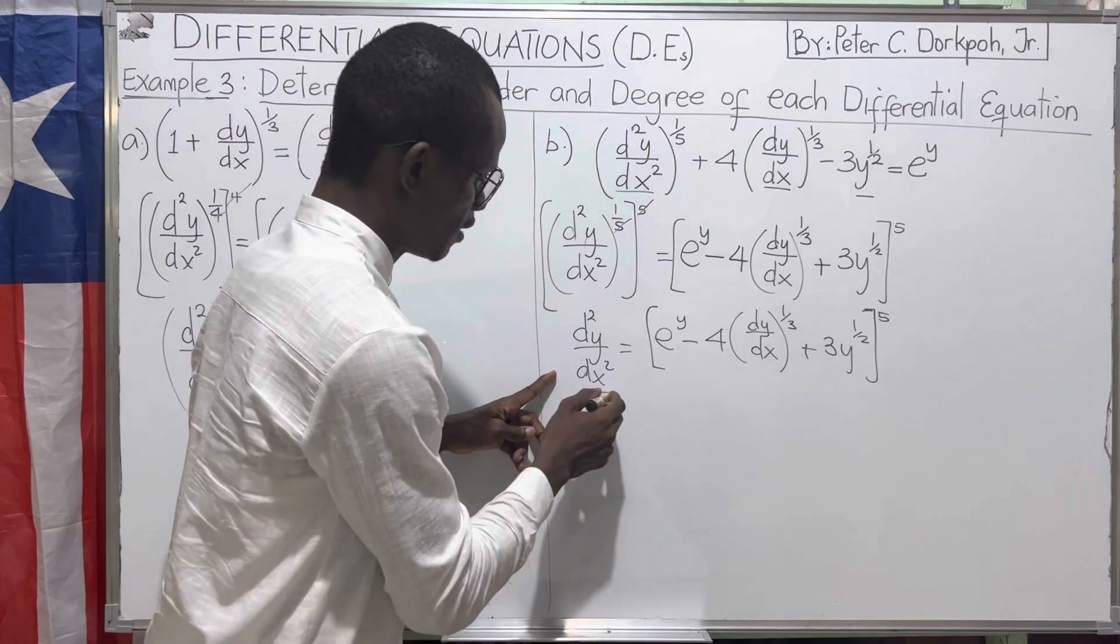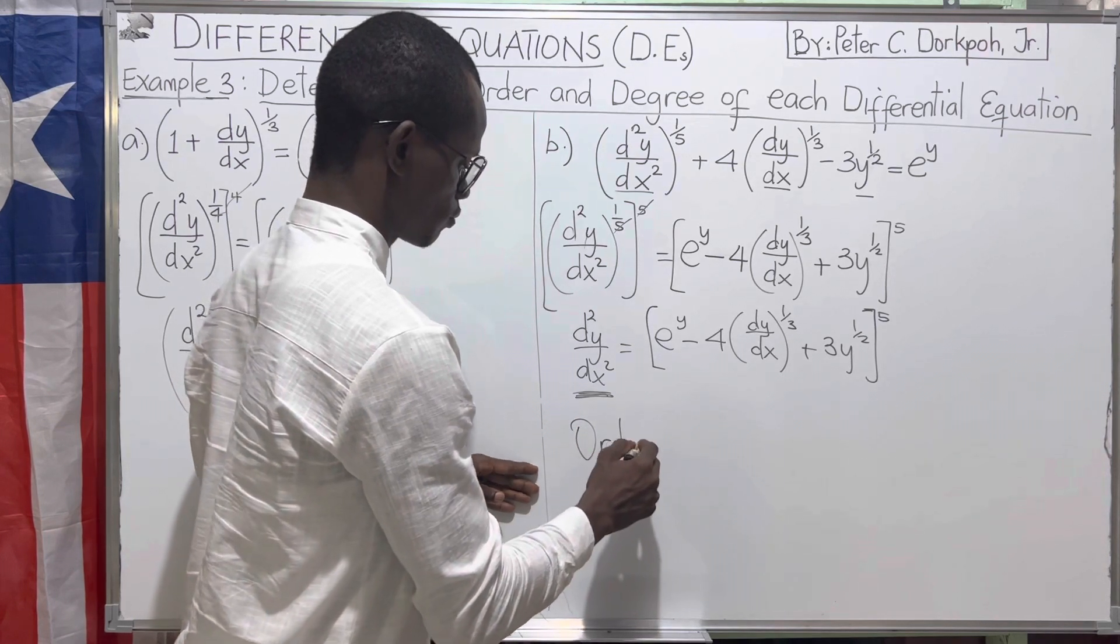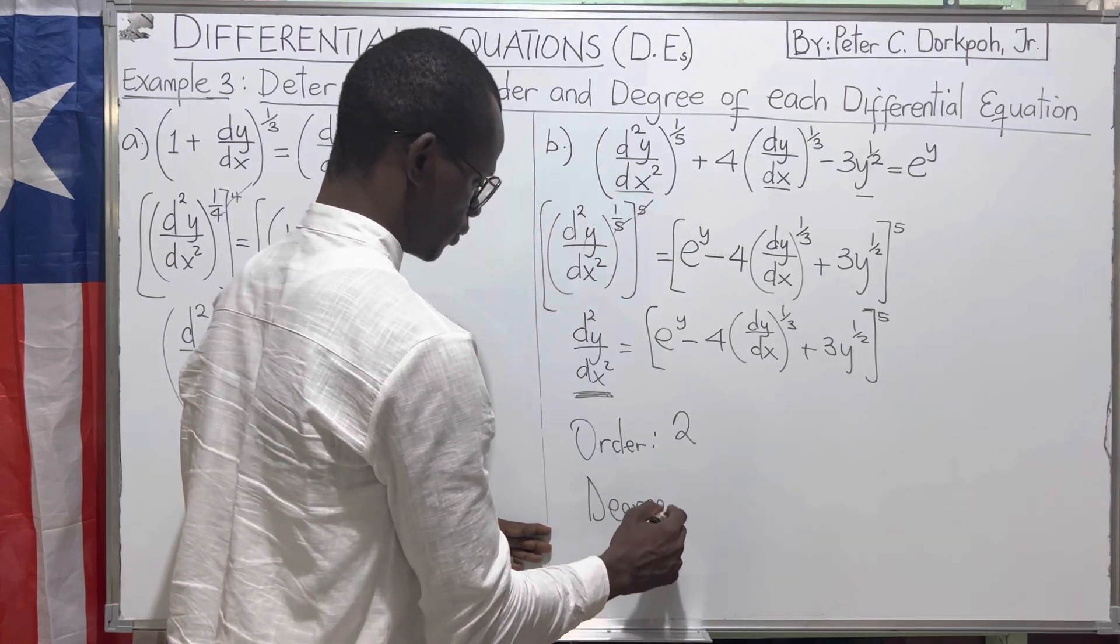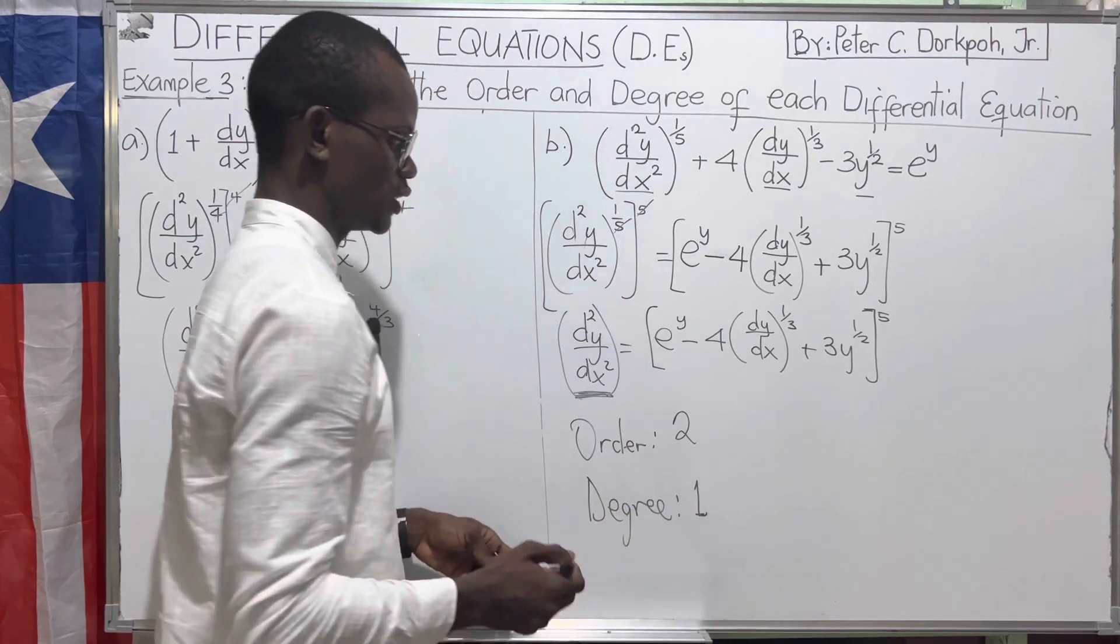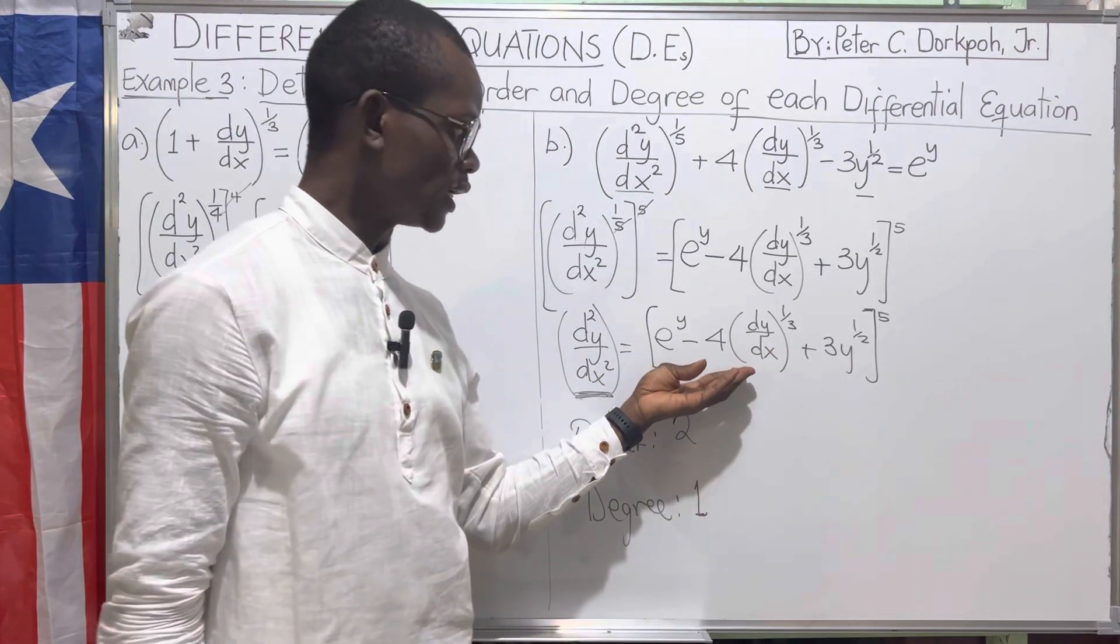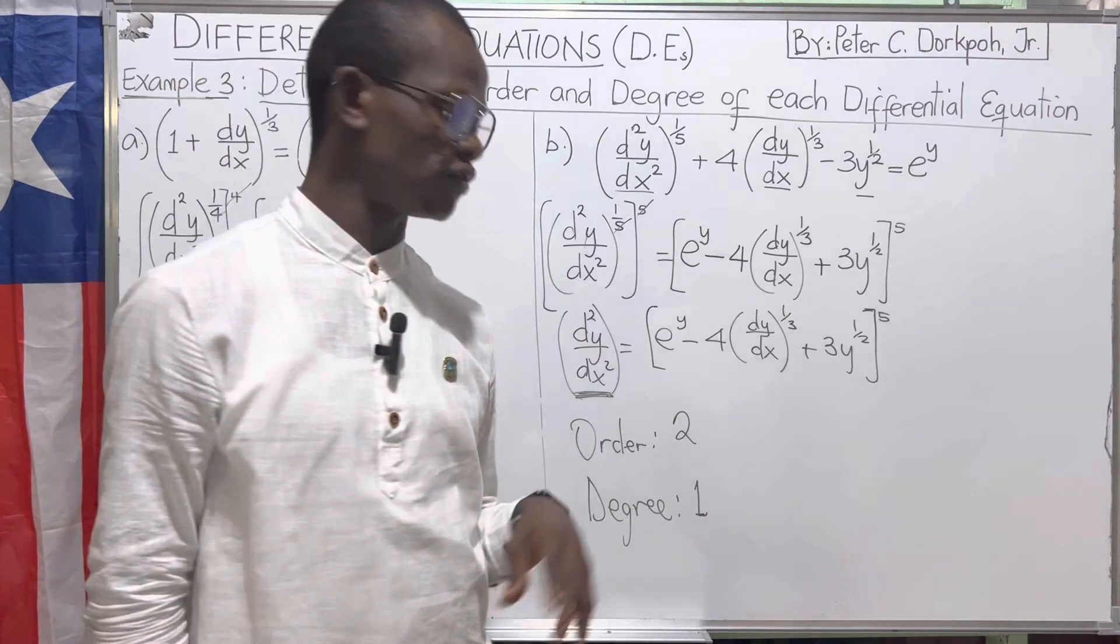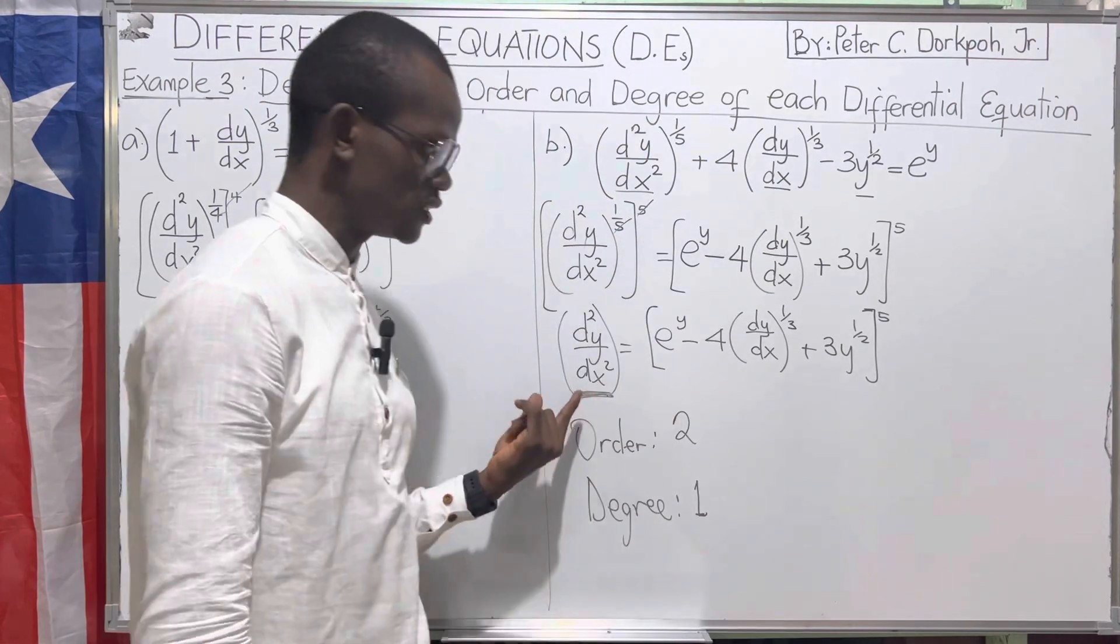The highest derivative here now is of order two. This is the second derivative. So you have order two. What is the power of this order two? It's one. So the degree is one. We are not really bothered by this side because we've already identified the highest derivative and solved for that higher derivative such that the power of the highest derivative is not a fractional power. That's what we did here.